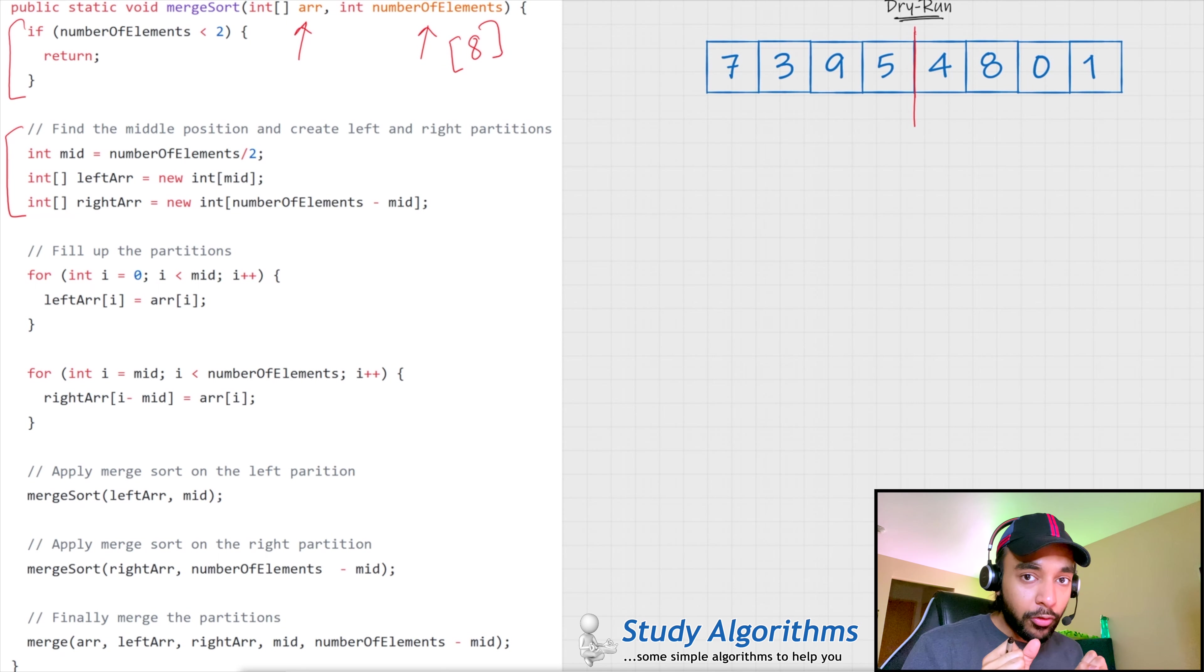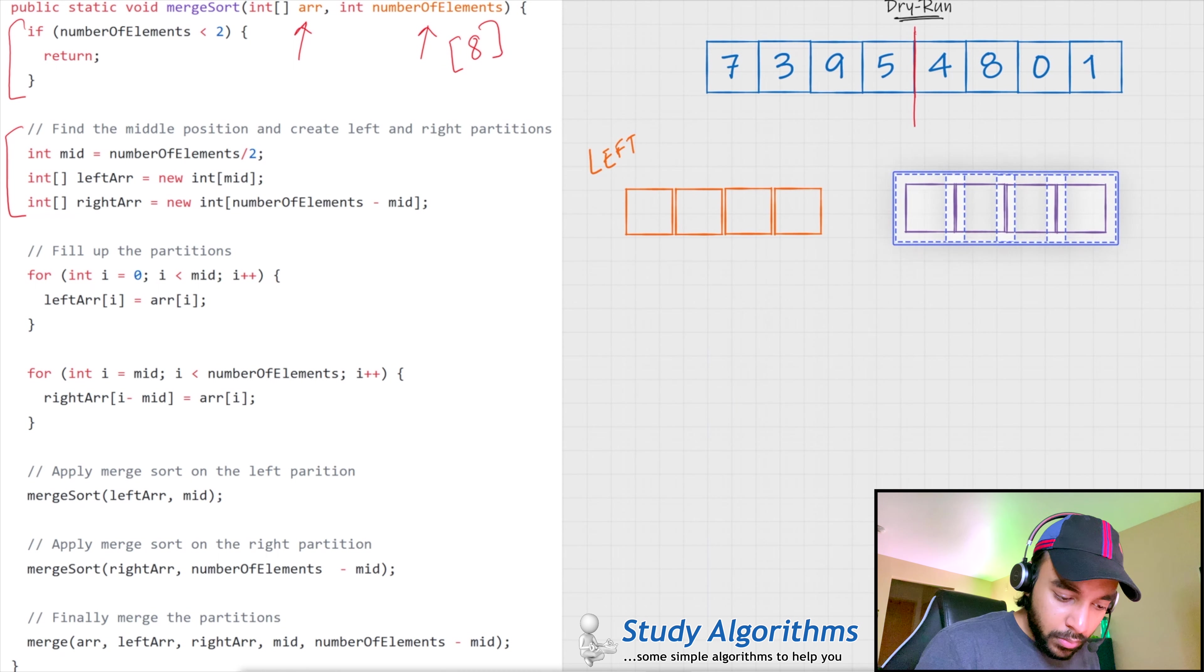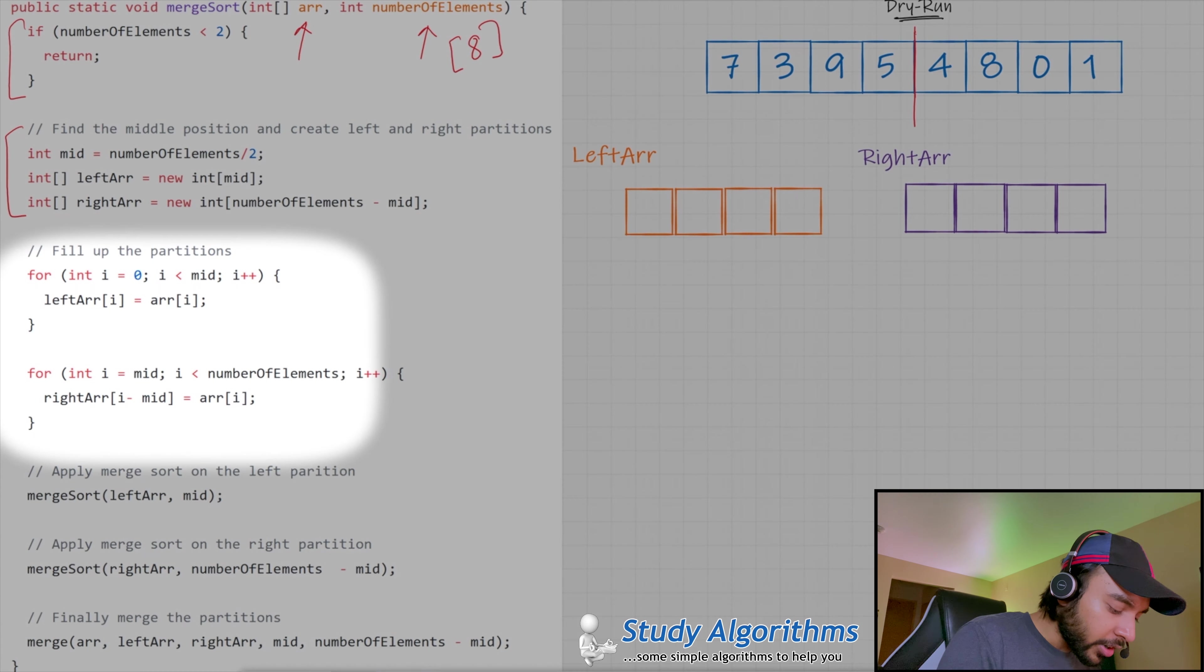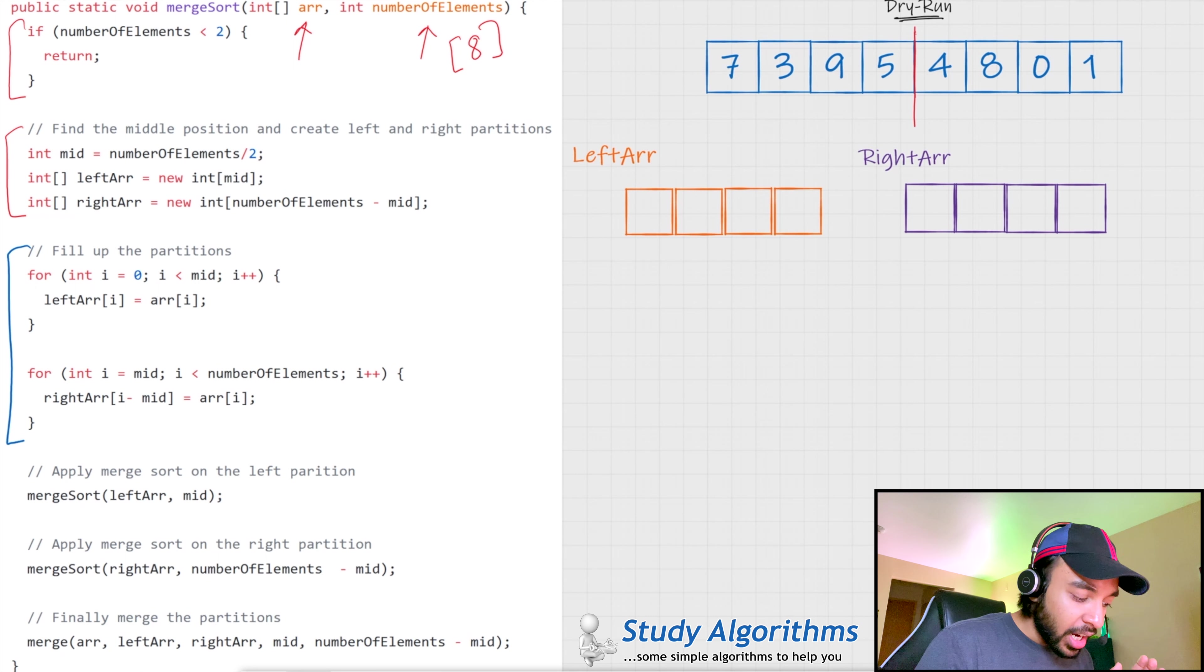So, these array would look like. Then, moving forward, I fill up both of these empty arrays with the left and the right partitions. So, when I fill the left partition, it would come 7, 3, 9, 5 and the right partition would contain 4, 8, 0, 1.